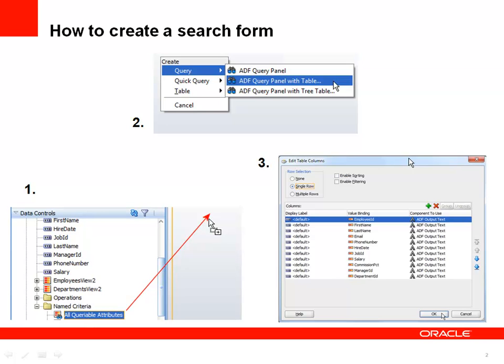Assuming your business model is set up with ADF business components, the data control that is exposed in the data control panel is the application module. That application module lists view object instances that you use as a collection to build tables and forms. The view object instance exposes attributes, nested or detailed view object instances, but also two nodes: one for the operations and one for name criteria. The default criteria that all view objects have is the all queryable attributes criteria.